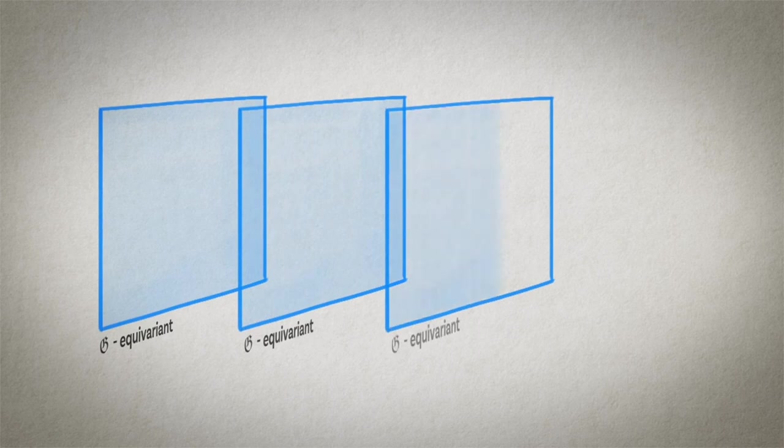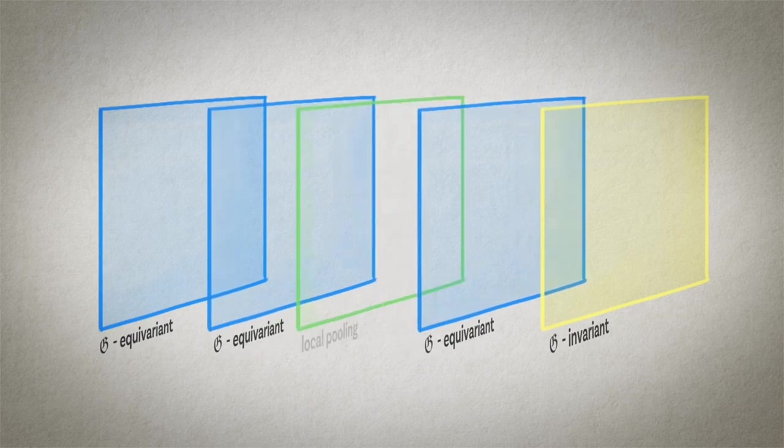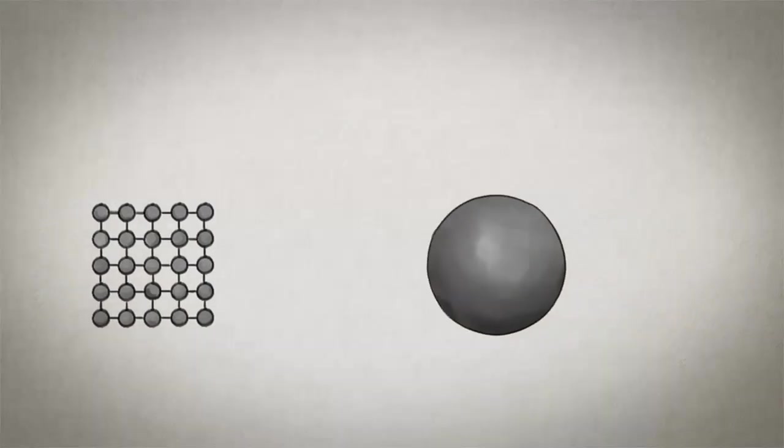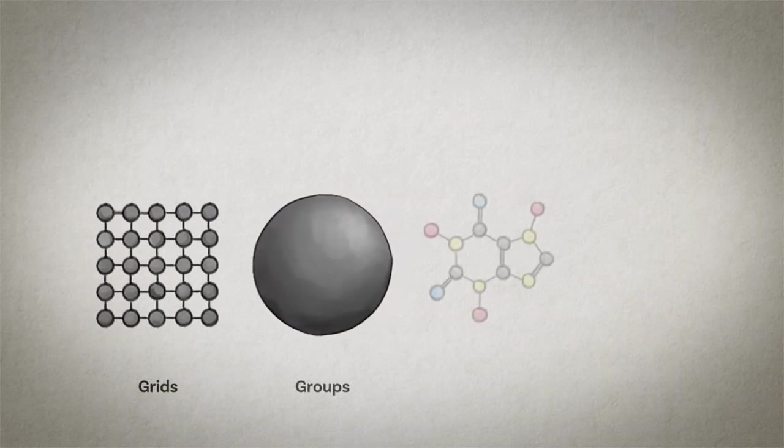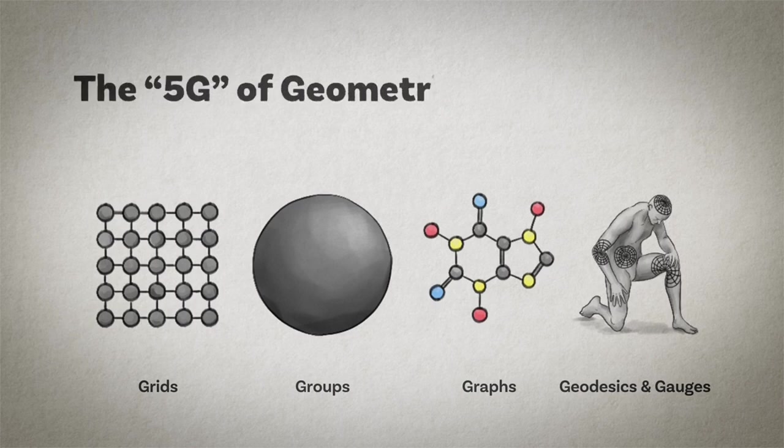So these two principles give us a general blueprint of geometric deep learning that we can recognize in the majority of popular deep neural architectures. We can apply a sequence of equivariant layers and then an invariant global pooling layer, aggregating everything to a single output. And in some cases, we can also create a hierarchy of domains by some coarsening procedure that takes the form of local pooling in neural network implementations.